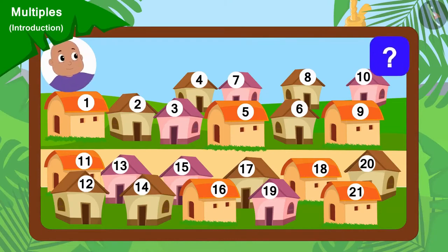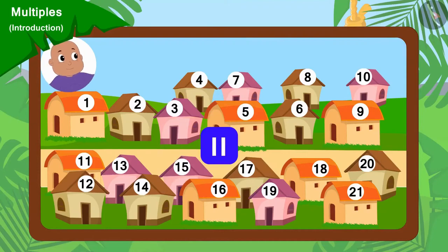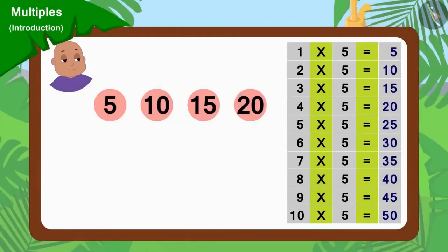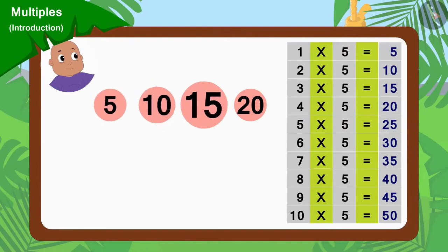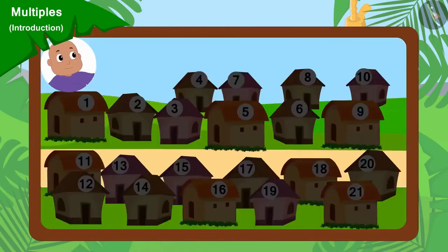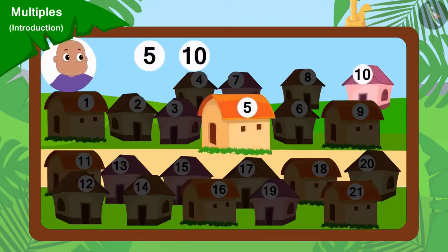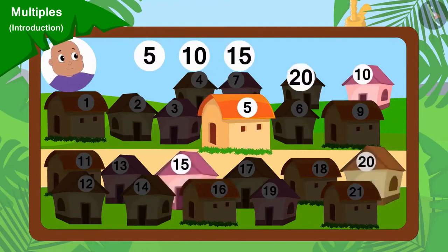You can stop the video and find the answer. Well done, children, your answer is absolutely correct. We can find multiples of 5 with the help of the multiplication table of 5. Bablu will go to collect donations from houses 5, 10, 15 and 20.